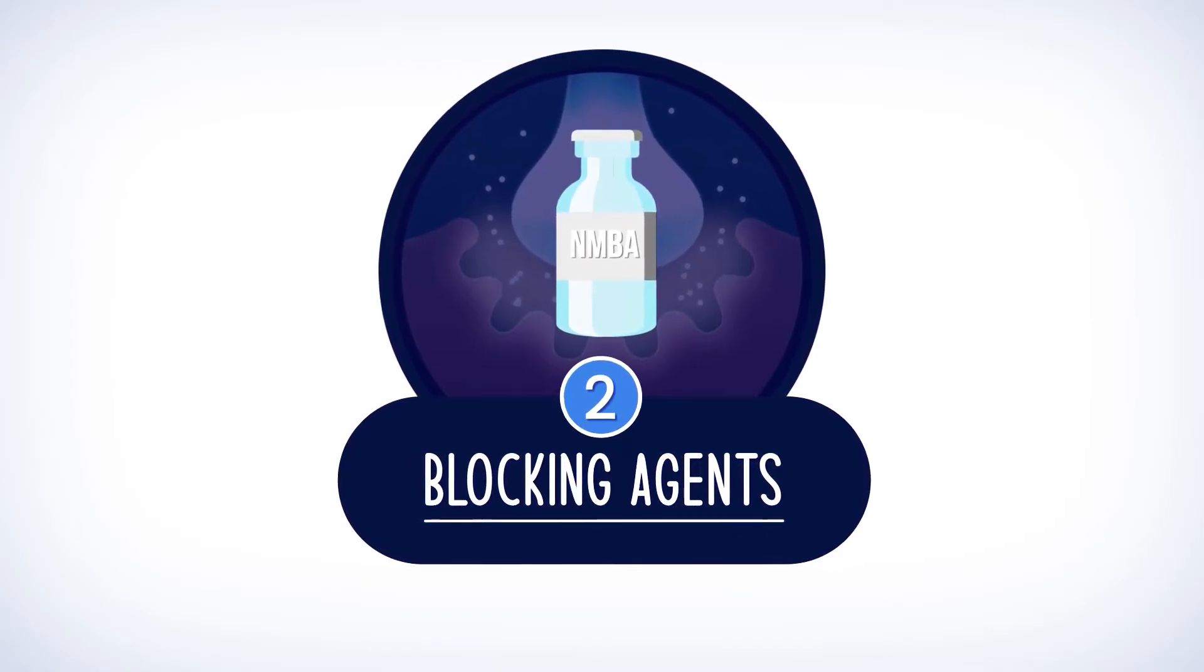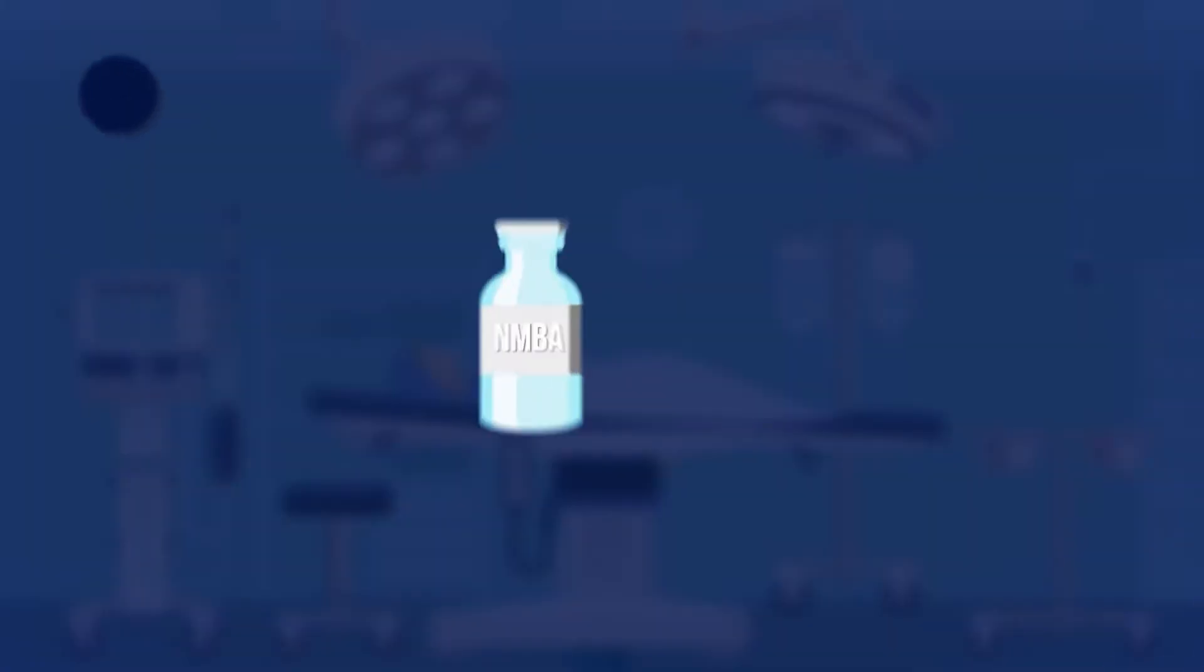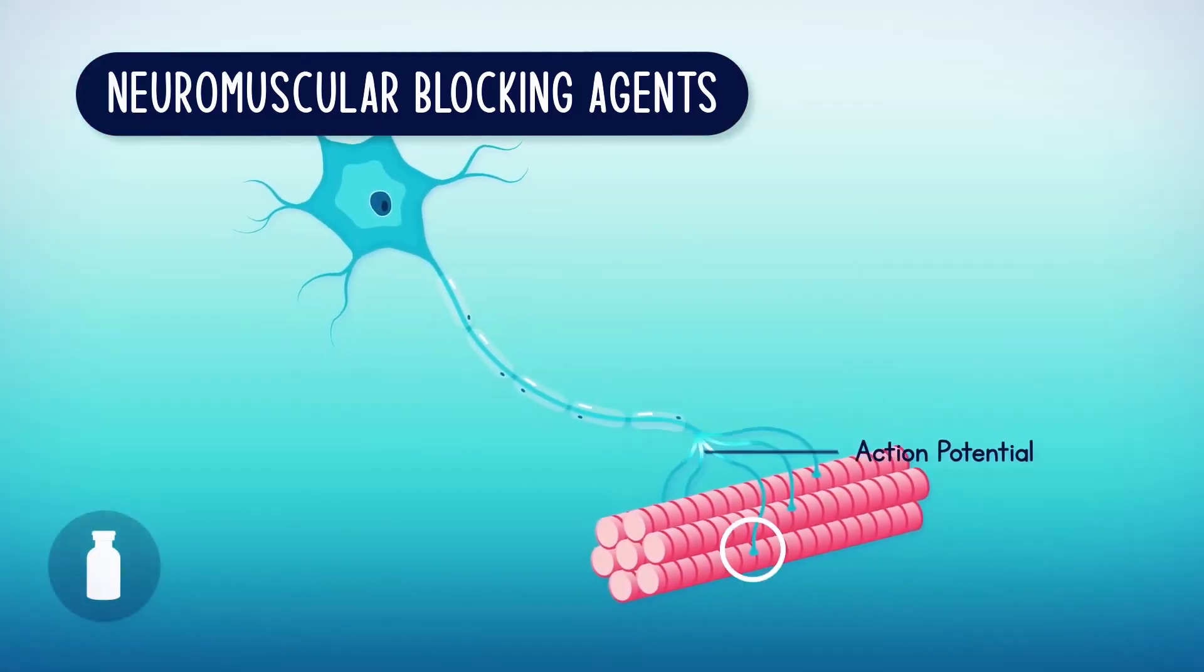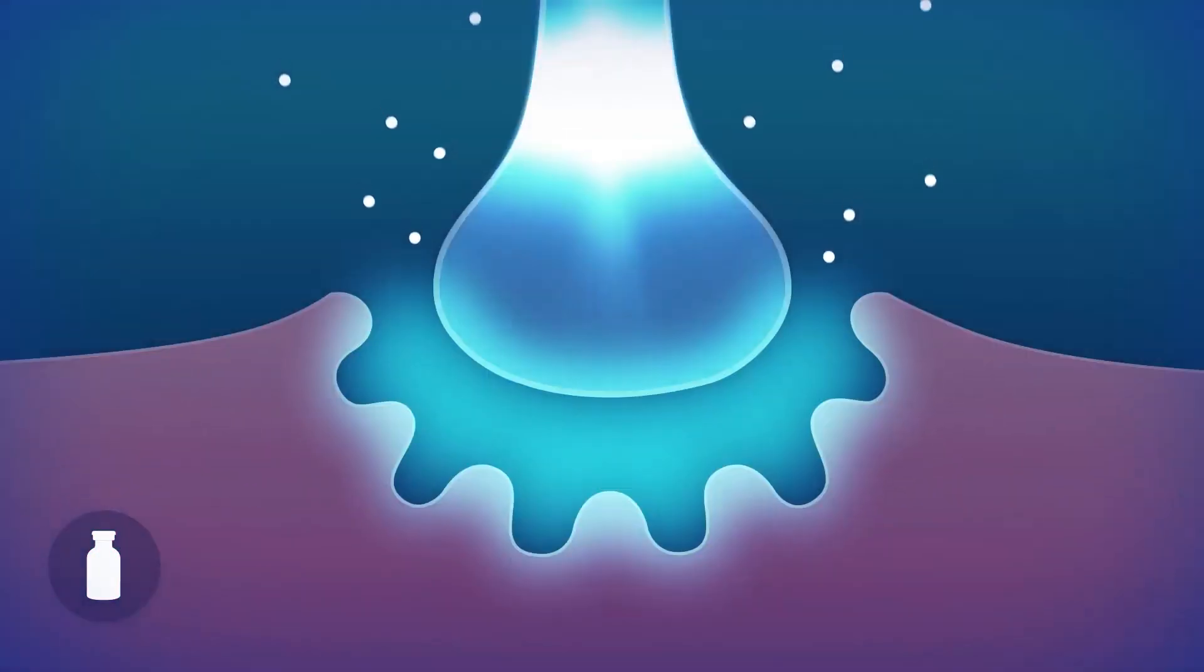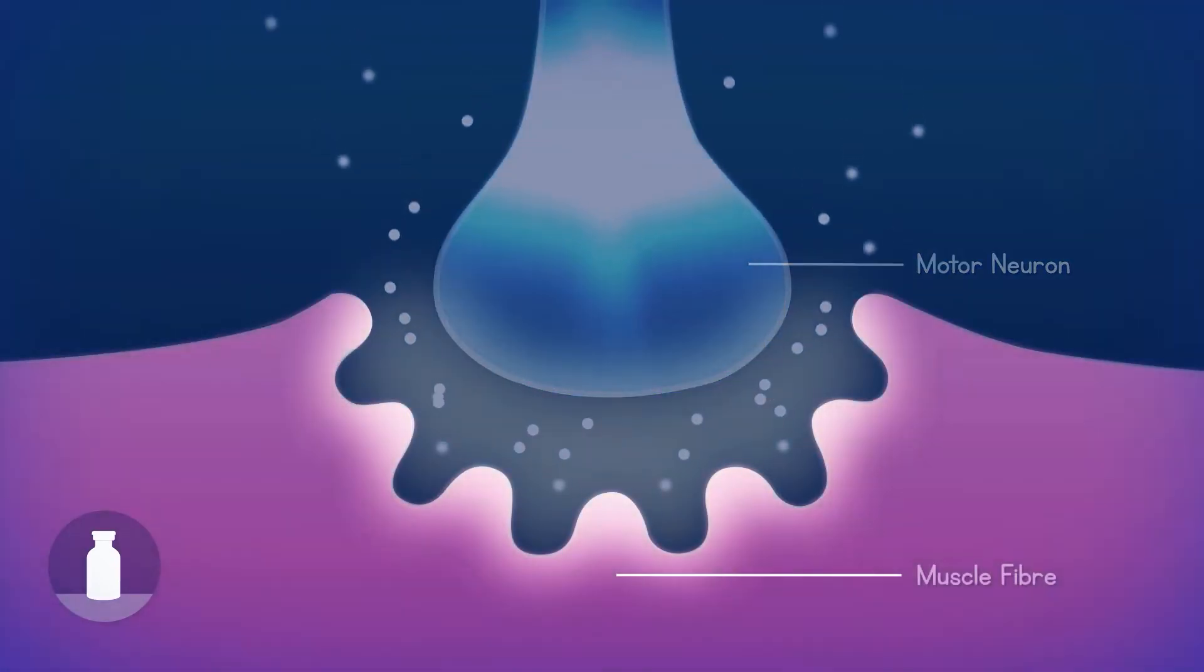A neuromuscular blocking agent, or simply NMBA or blocking agent for short, is a class of drug that creates a communication block between a motor neuron and a muscle fiber.